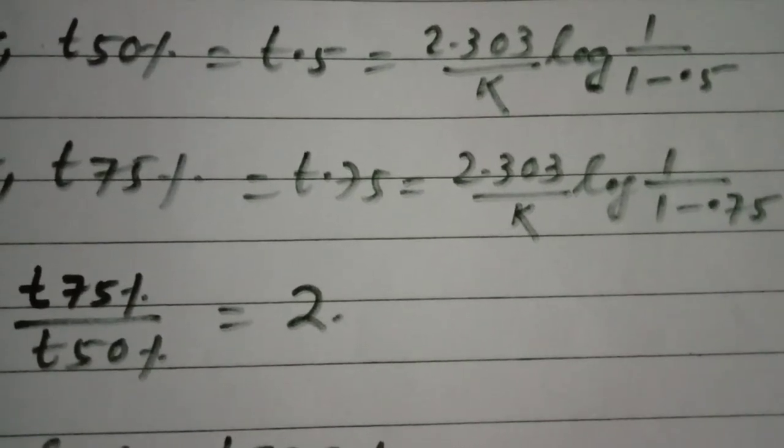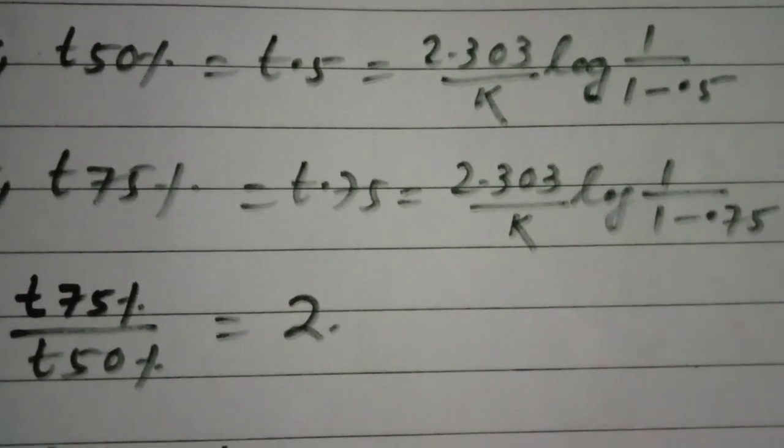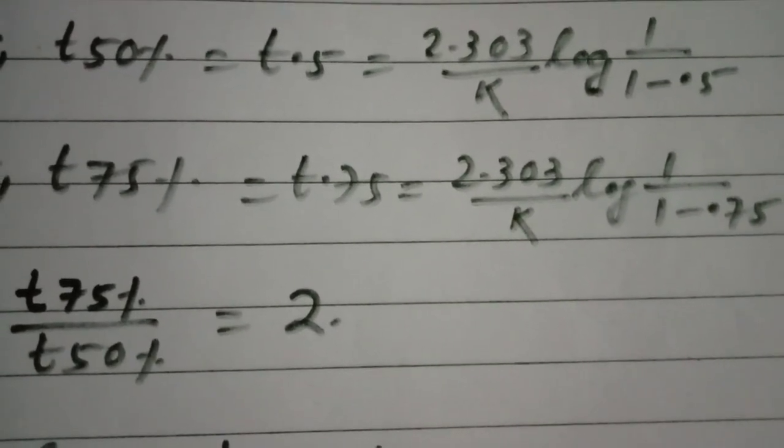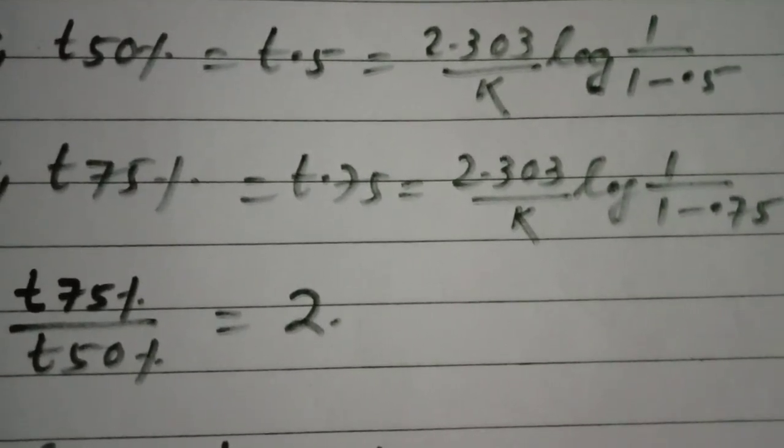Then at t75 percent, that is t point seven five, the equation is reduced to 2.303 by k log 1 by 1 minus 0.75. 1 by 1 minus 0.75 is found to be 4.